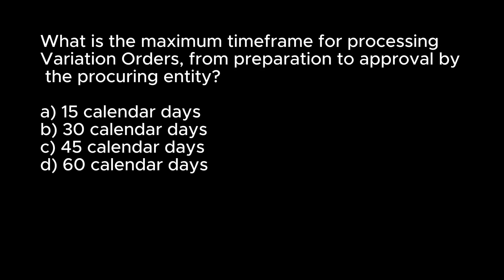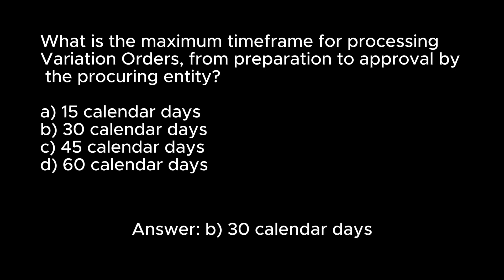What is the maximum time frame for processing variation orders, from preparation to approval by the procuring entity? A. 15 calendar days. B. 30 calendar days. C. 45 calendar days. D. 60 calendar days. Answer: B. 30 calendar days.